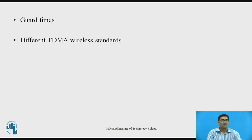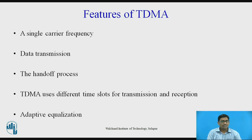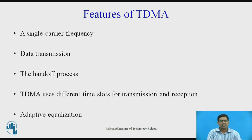Different TDMA wireless standards have different TDMA frame structures. The features of TDMA include the following. First, TDMA shares a single carrier frequency with several users where each user makes use of non-overlapping time slots. The number of time slots per frame depends on several factors such as the modulation technique, available bandwidth, etc. Data transmission for users of a TDMA system is not continuous but occurs in bursts. This results in low battery consumption since the subscriber transmitter can be turned off when not in use. Because of discontinuous transmission in TDMA, the handoff process is much simpler for a subscriber unit since it is able to listen for other base stations during idle time slots.